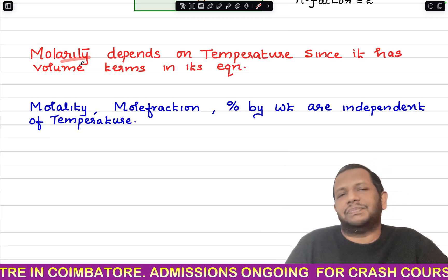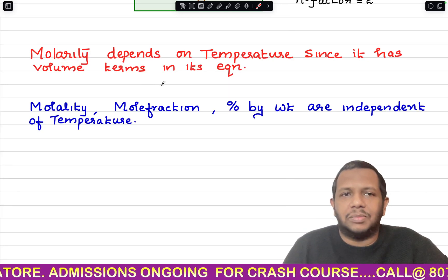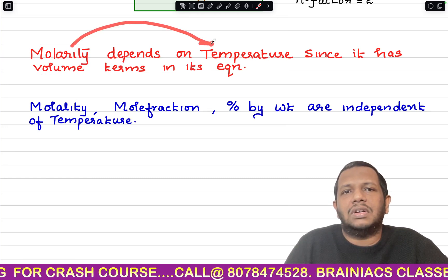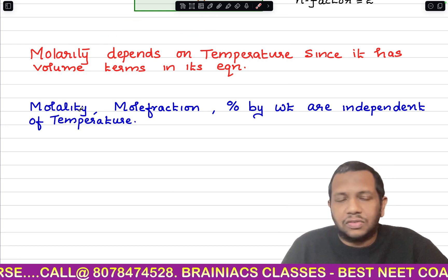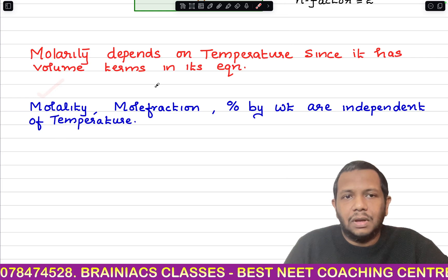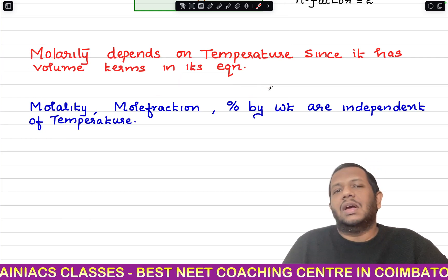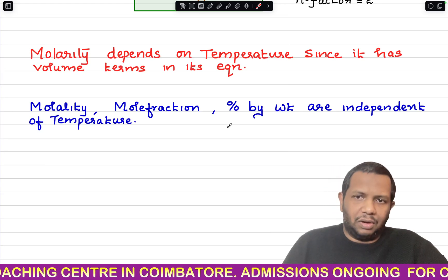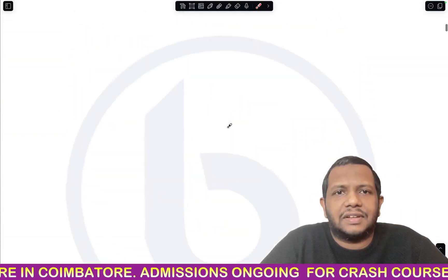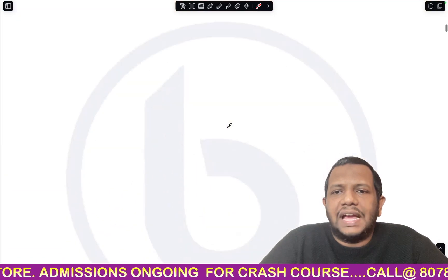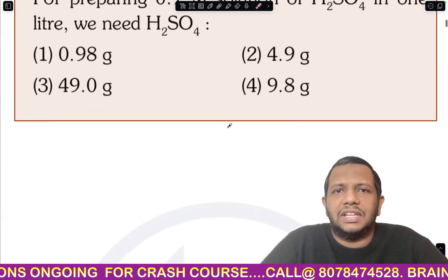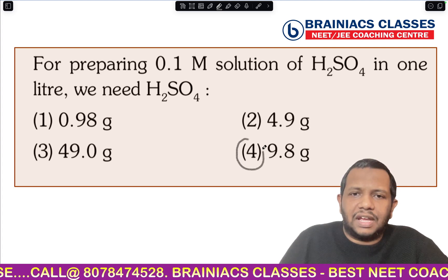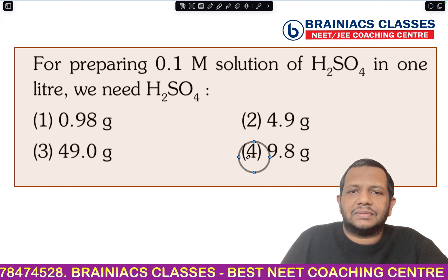Another important point about molarity: since the formula contains a volume term, and volume depends on temperature, molarity depends on temperature. However, other concentration terms like molality, mole fraction, and percentage by weight do not have a volume term, so they are independent of temperature. Our answer is 9.8 grams — option 4.